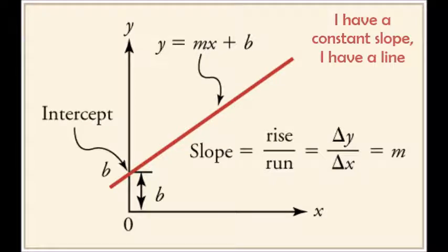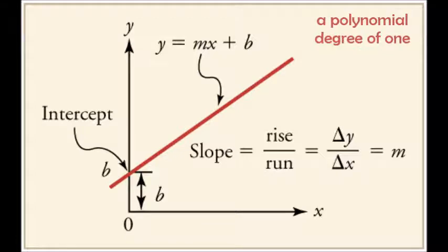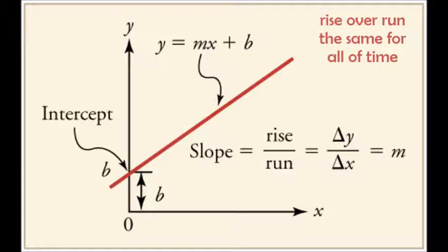I have a constant slope, I have a line, a polynomial degree of one, rise over run, I'm the same for all of time, mx plus b, I graph the line.